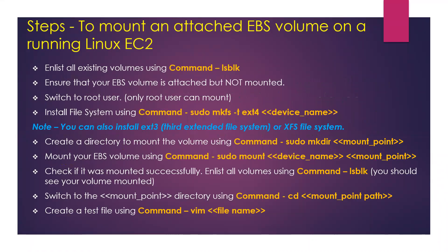Let's outline all the steps for mounting an attached EBS volume on a running EC2 instance. First, we will list all volumes using the command lsblk. After listing the volumes, we will ensure our EBS volume is attached but not mounted. Only the root user can mount a volume, so we need to switch to the root user.